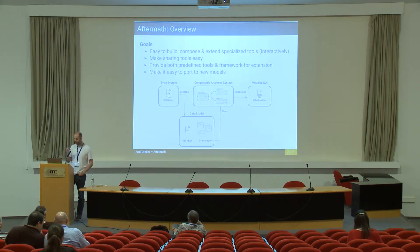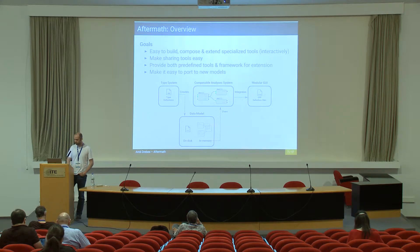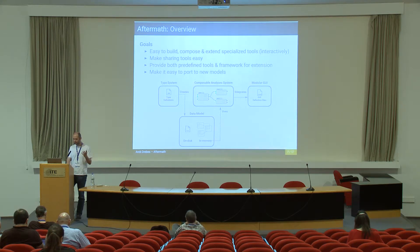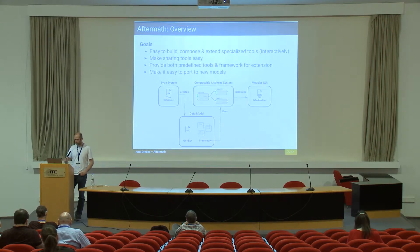This is how we try to respond to these goals. First of all, we propose a type system, which is basically a Python file with definitions that define the data types used in the on-disc formats — the trace format — and the in-memory representation of a trace after it has been loaded into memory. Then we have a composable analysis system which boils down to using nodes and interconnecting them. And we have a system that allows you to build modular graphical user interfaces and reference different widgets in a definition file that can then be loaded by Aftermath.